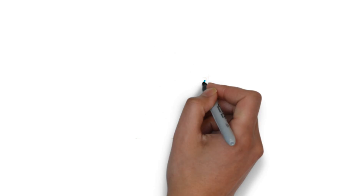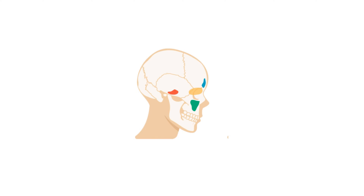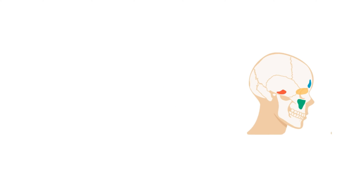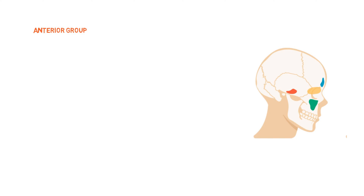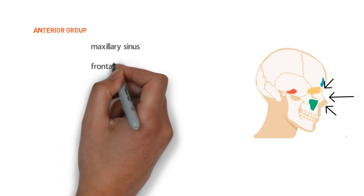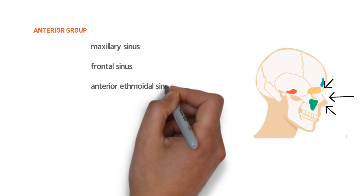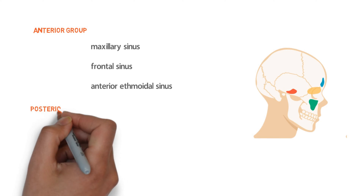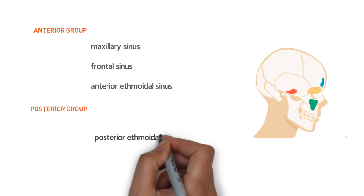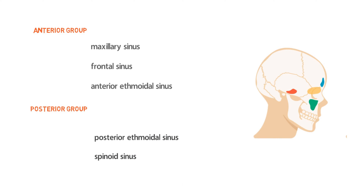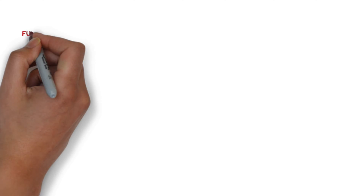These four pairs of paranasal sinuses are divided into two groups: the anterior group and the posterior group. In the anterior group there are maxillary sinus, frontal sinus, and anterior ethmoidal sinus. The remaining — posterior ethmoidal sinus and sphenoid sinus — are present in the posterior group.